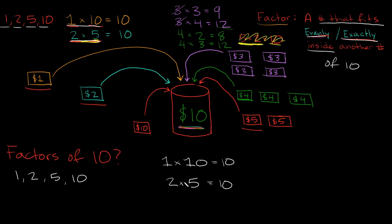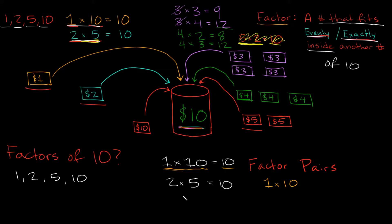One last thing I want to cover are factor pairs. Factor pairs are just the pair of numbers that you multiply together to get — in this example — 10. So for example, we multiplied 1 and 10 together to get 10, so 1 times 10 is a factor pair. The factor pairs of 10 are 1 times 10 and 2 times 5.